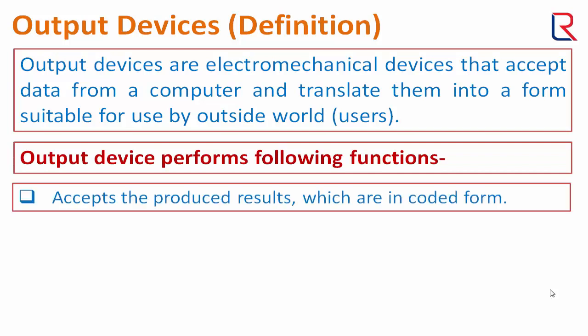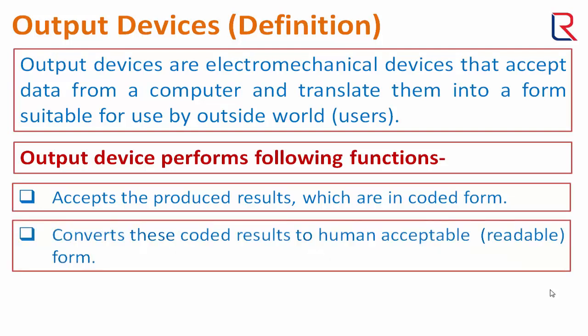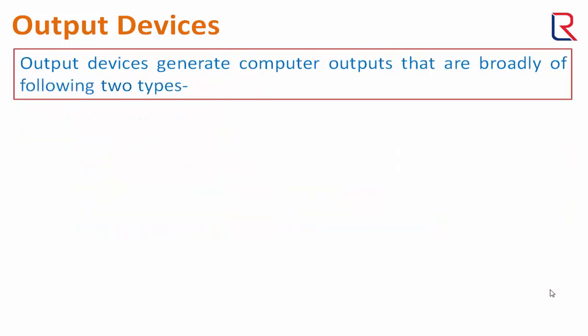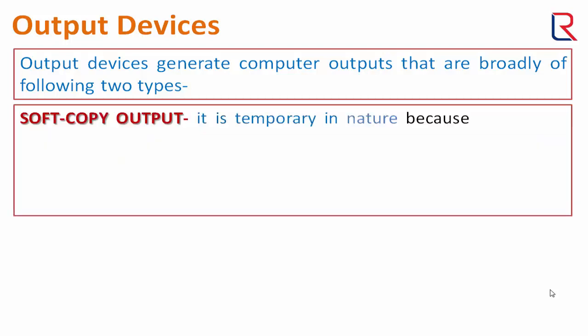Output devices perform the following functions: accept the produced results which are in coded form, convert these coded results to human acceptable form, and supply the converted results to the outside world. Output devices generate computer outputs that are broadly of two types: soft copy output and hard copy output.